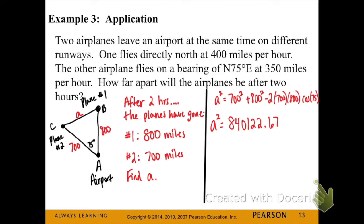When I plug the right side into my calculator, I get 840,122.67 and now I'm going to square root both sides and I get my answer of 917 miles apart.